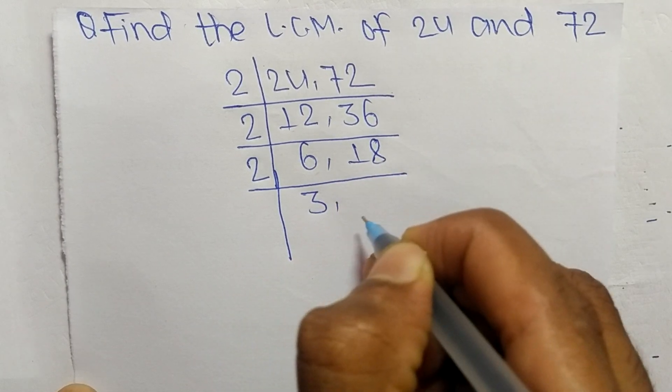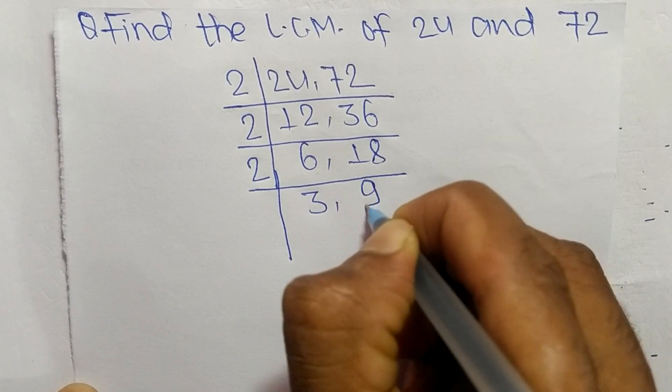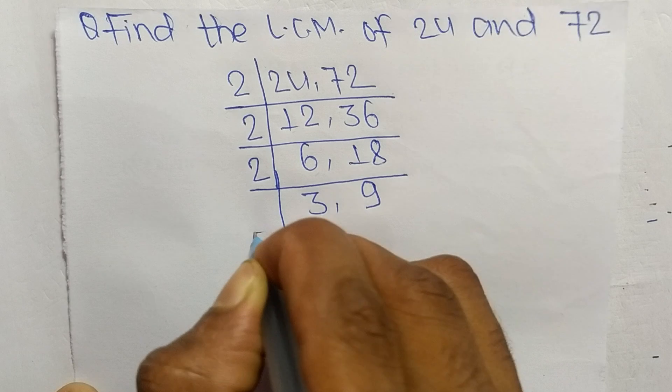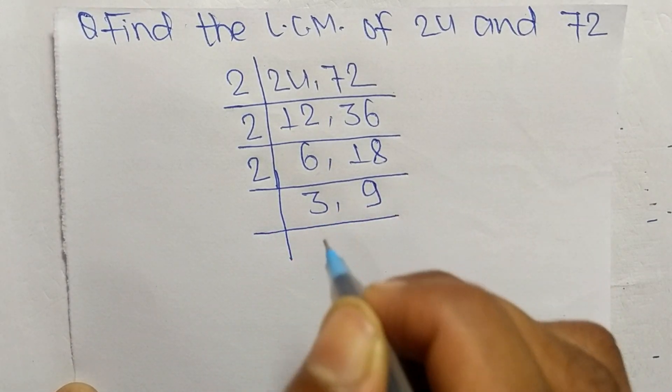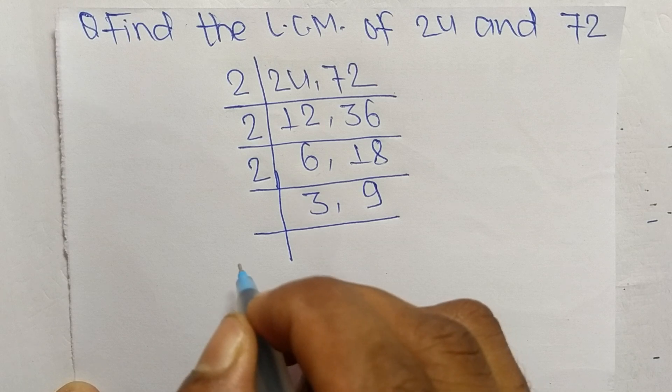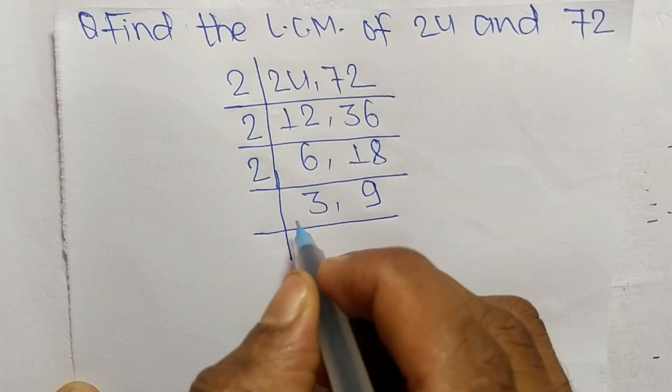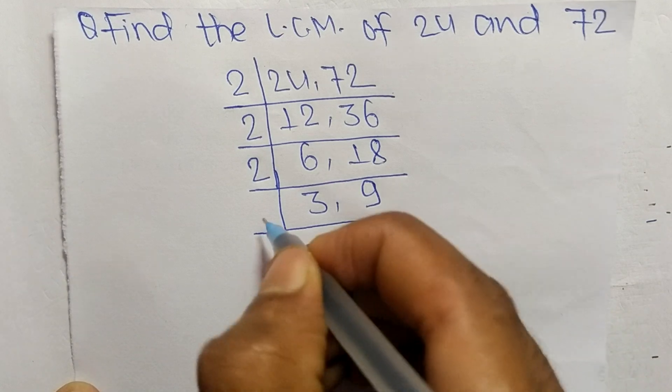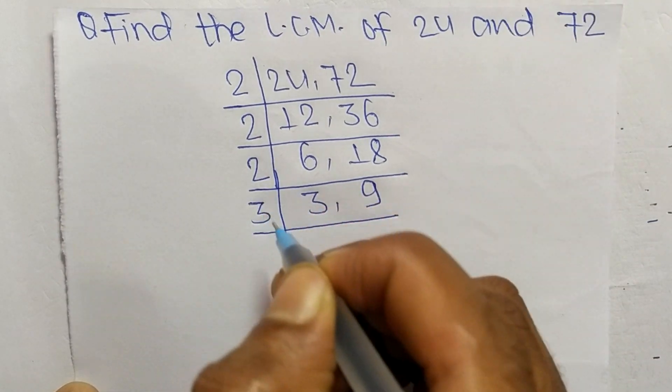So again both are divisible by 2. So 2 times 3 means 6 and 2 times 9 means 18. So again now these both numbers are not divisible by 2, so now we choose the number greater than 2 which can divide 3 and 9. So the number is 3.